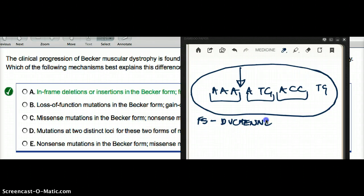But in Becker, what happens is even though there's an insertion or deletion, Becker is not going to have this problem with a multiple of three. Becker is going to have a multiple of three. It's just that they're going to have a defective protein because there was insertion or deletion. So the protein is defective.